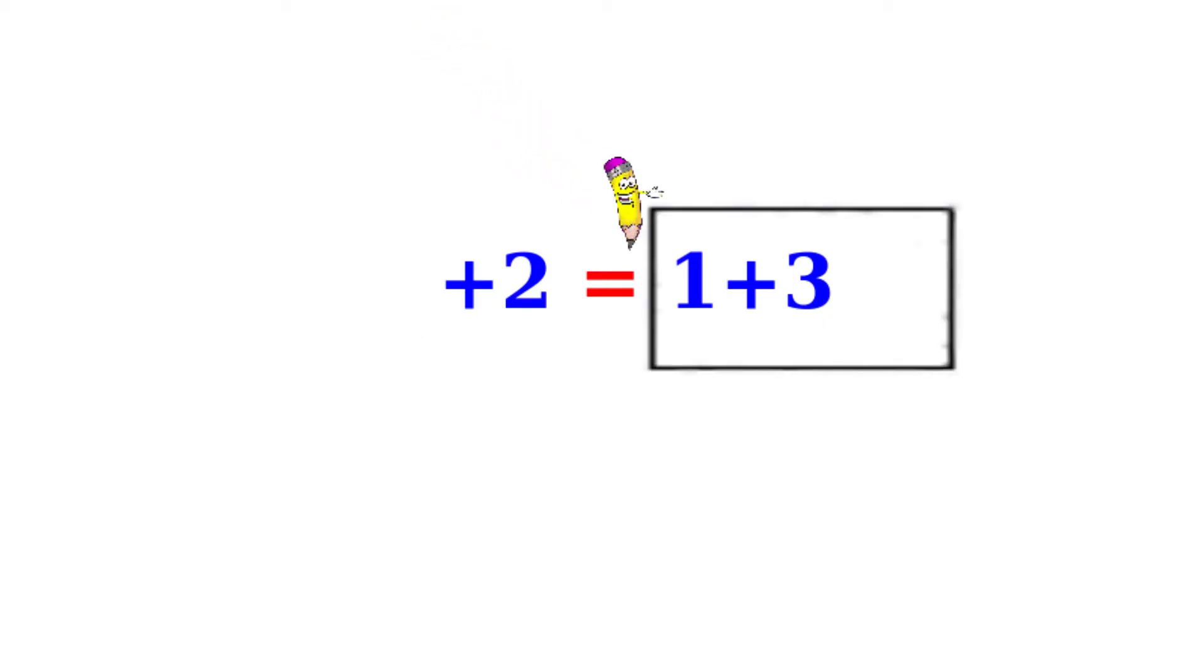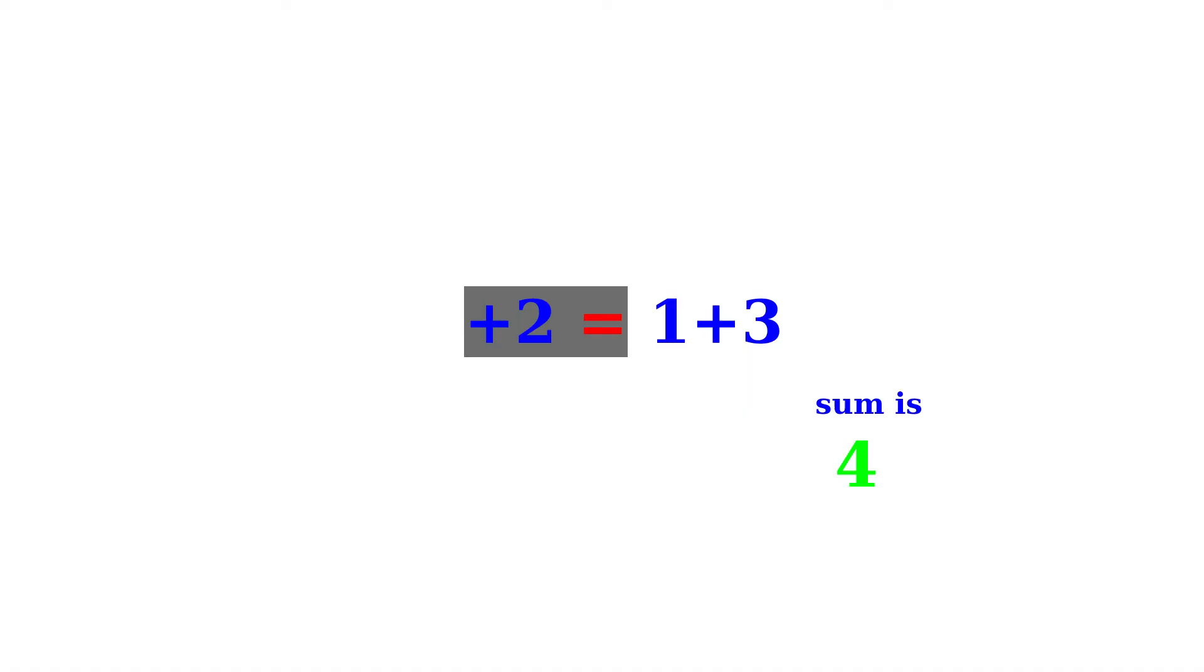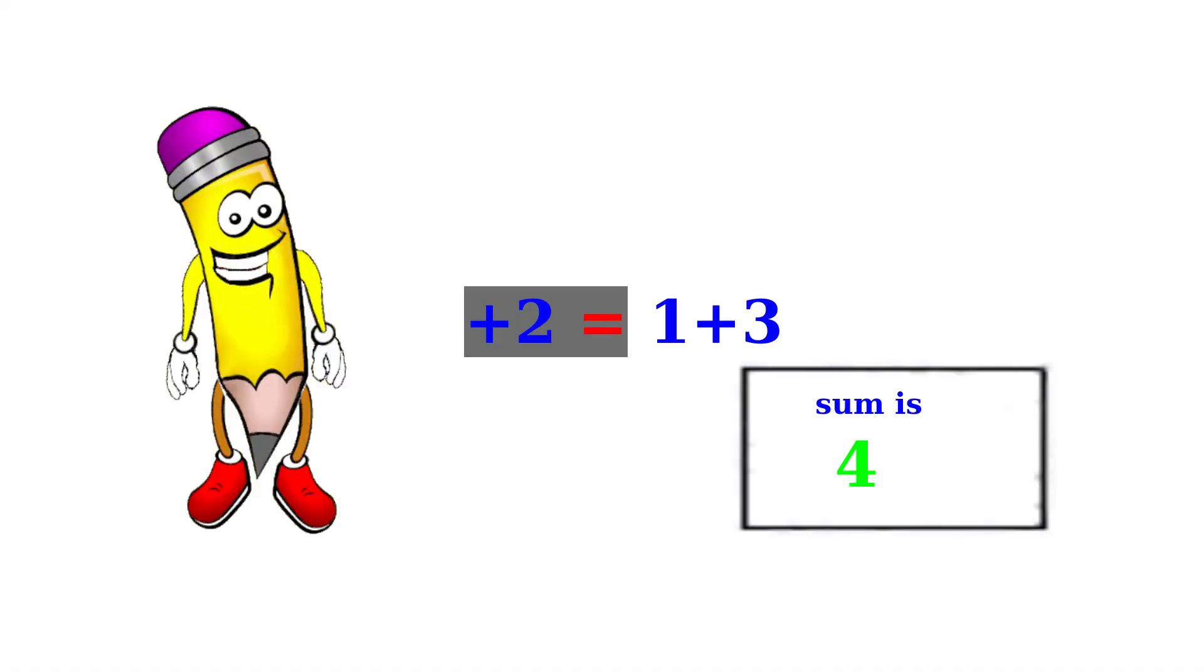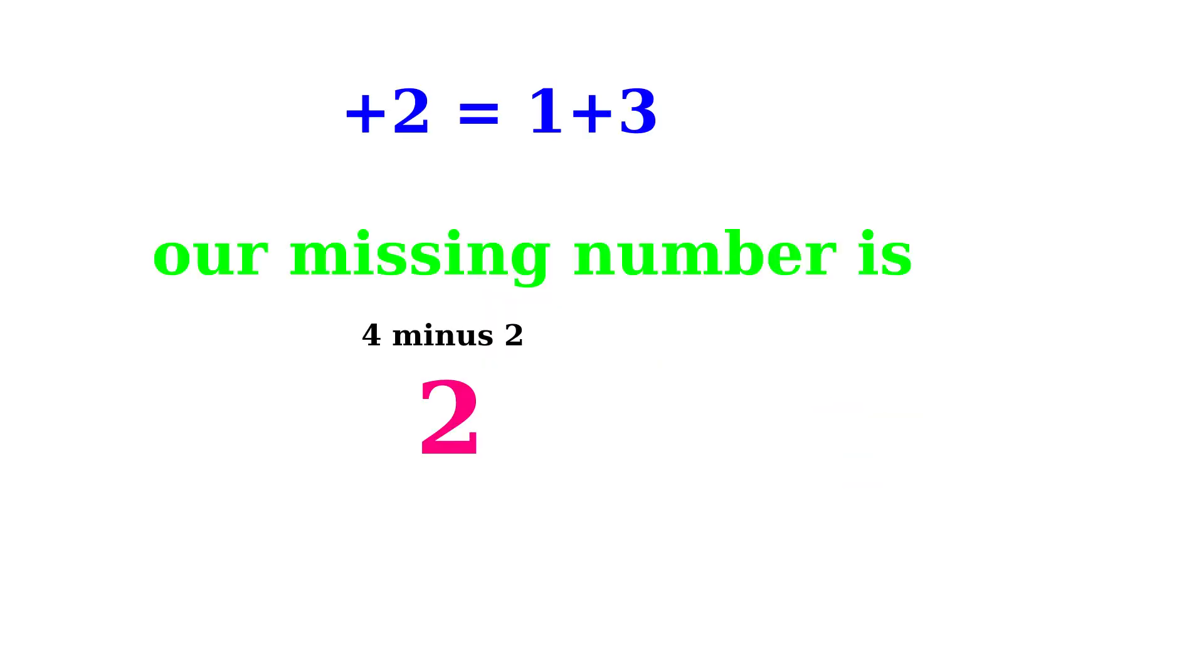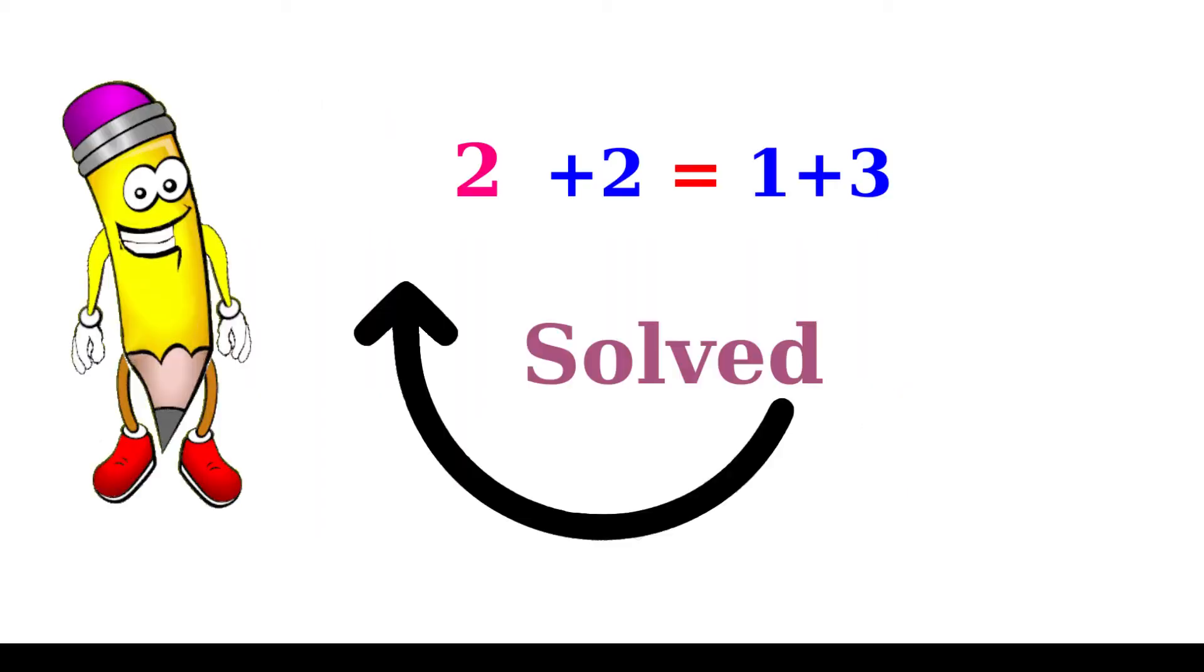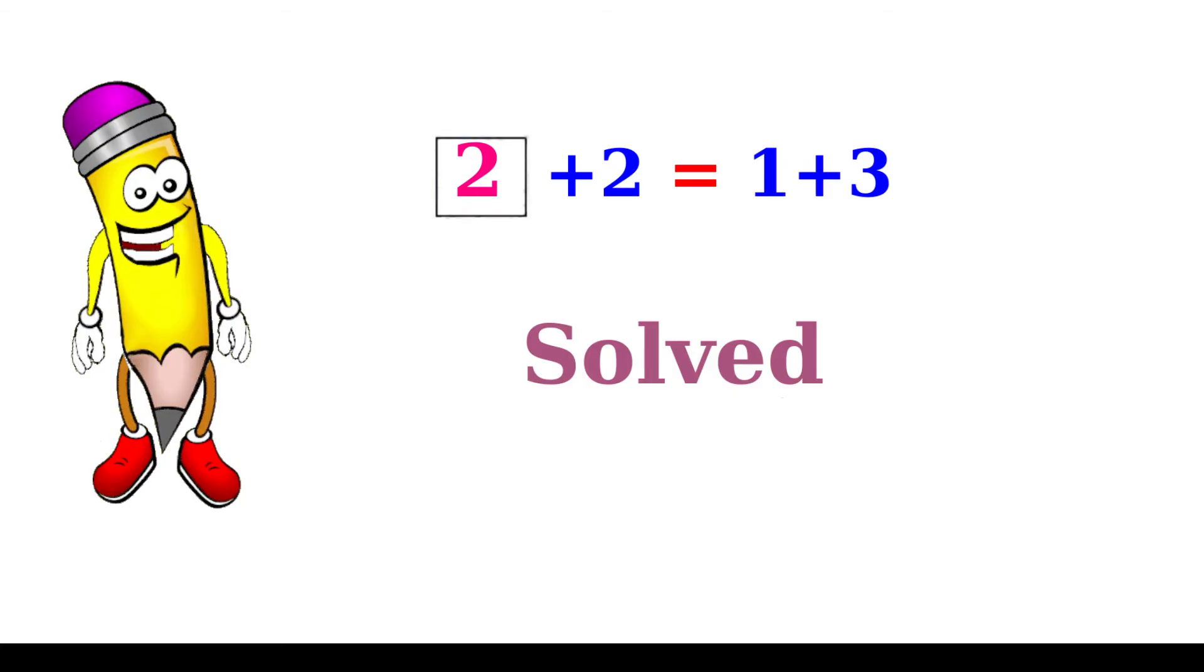In this case, 1 plus 3 equals 4. So our missing number is 4 minus the 2, which equals 2. Placing the missing number in the original equation solves the problem.